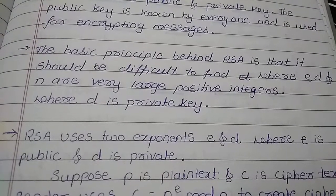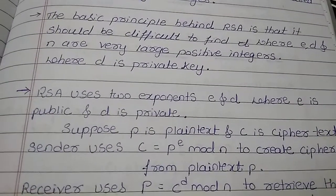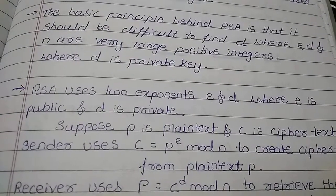RSA uses two exponents E and D where E is public and D is private.